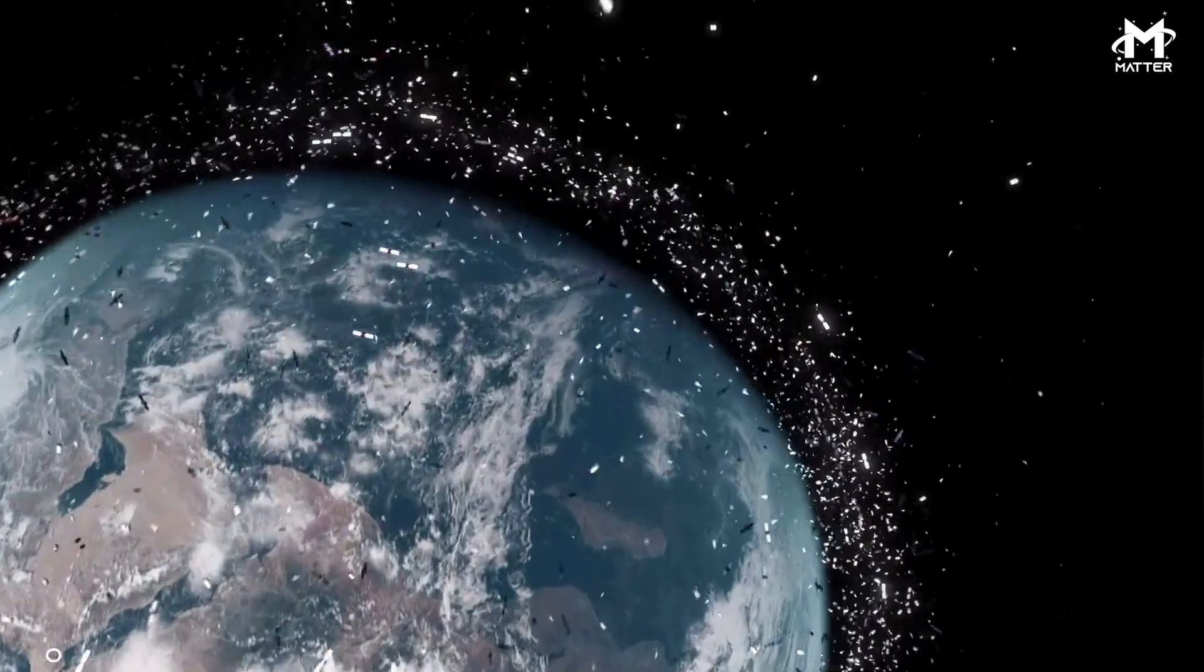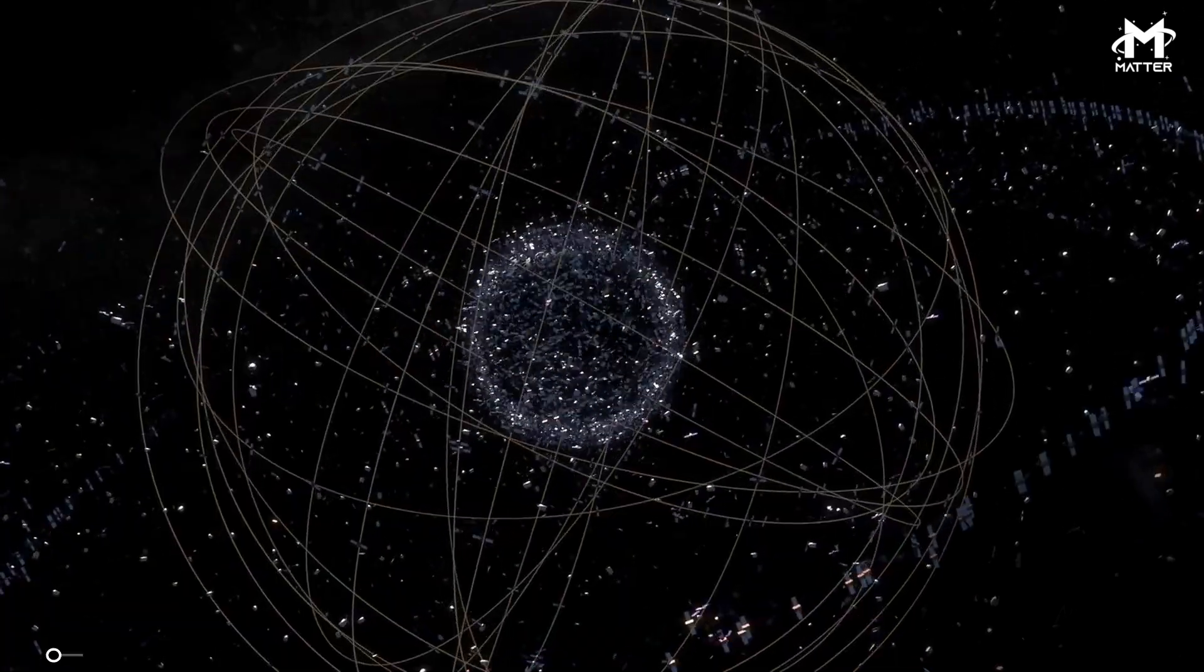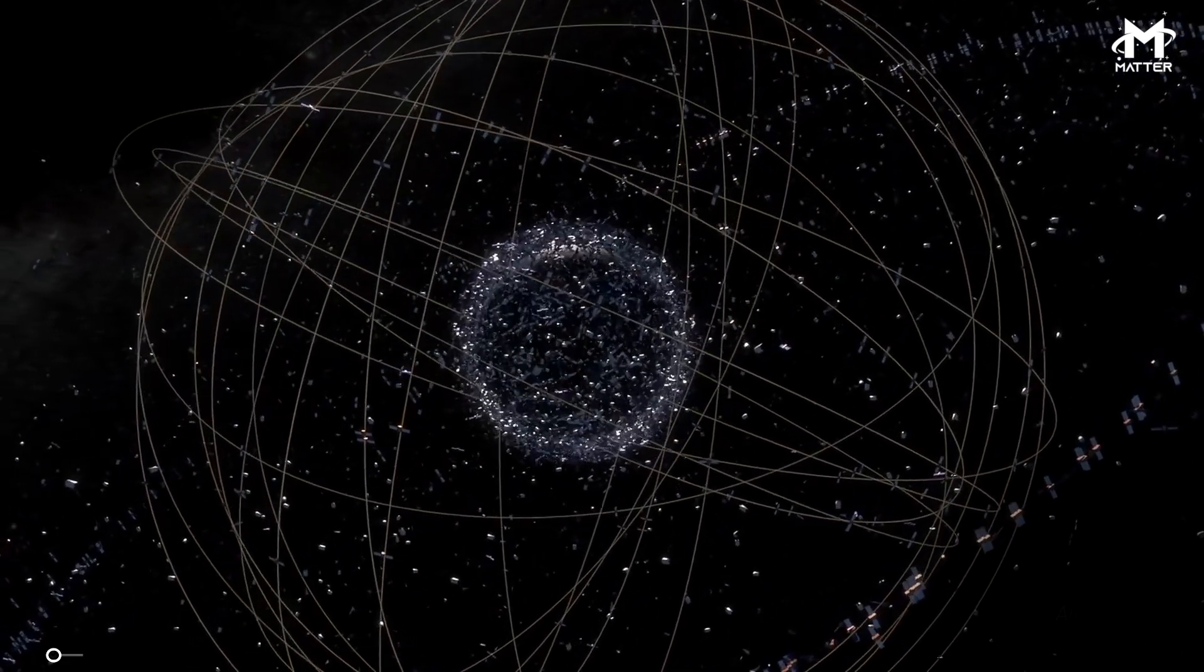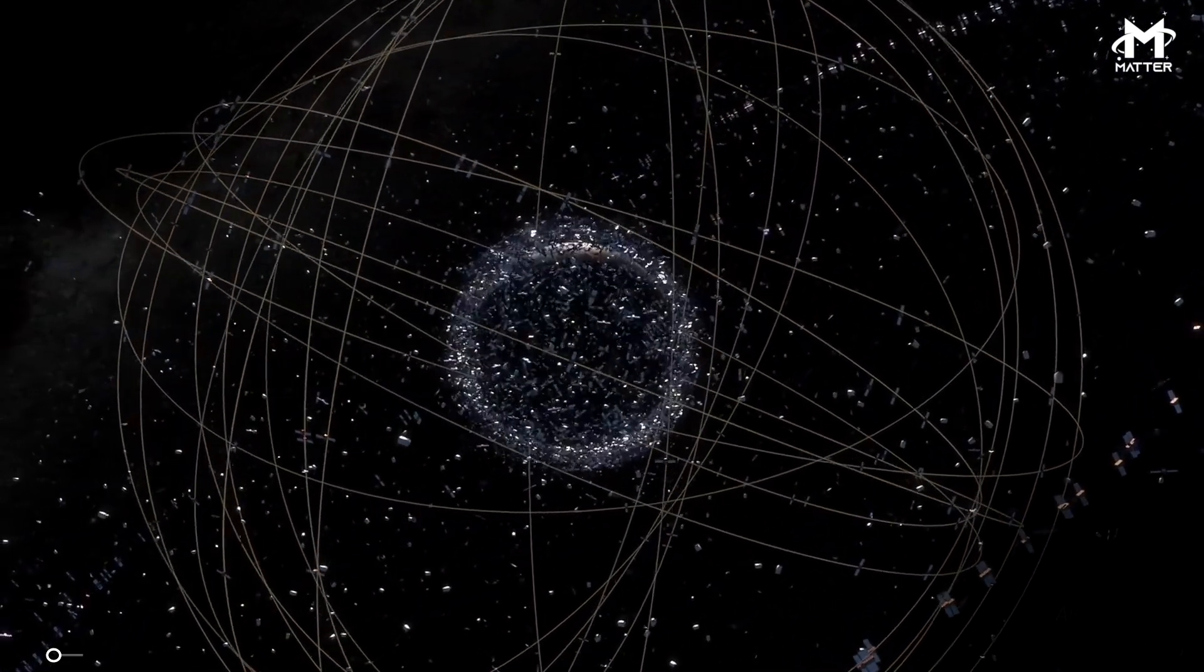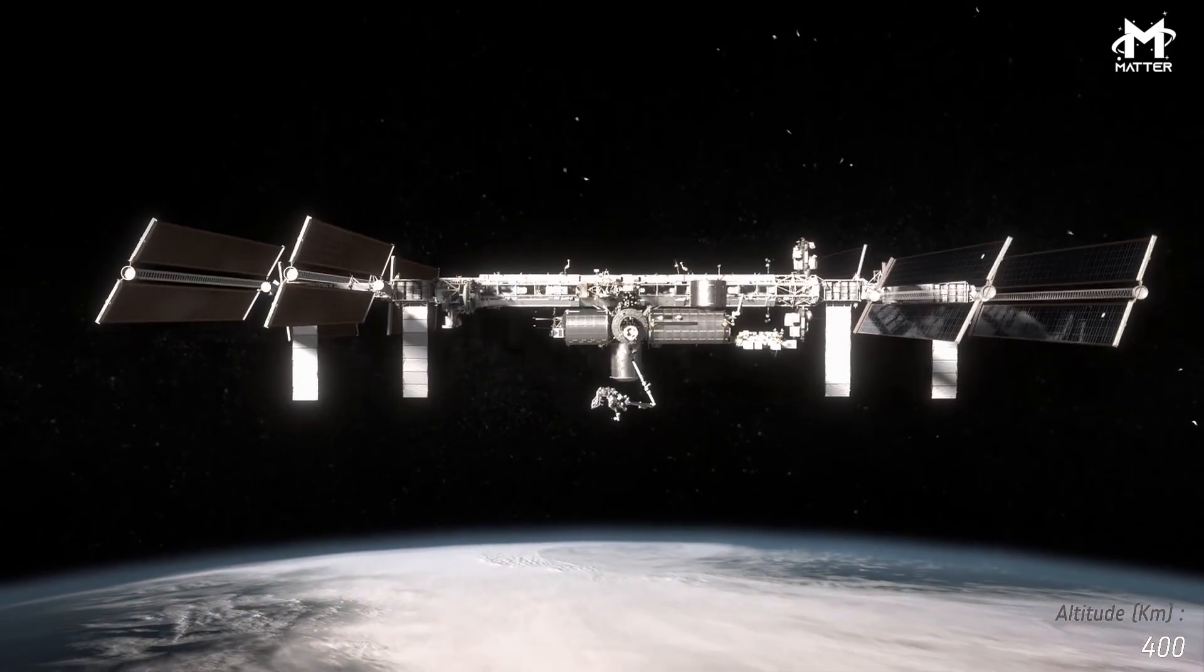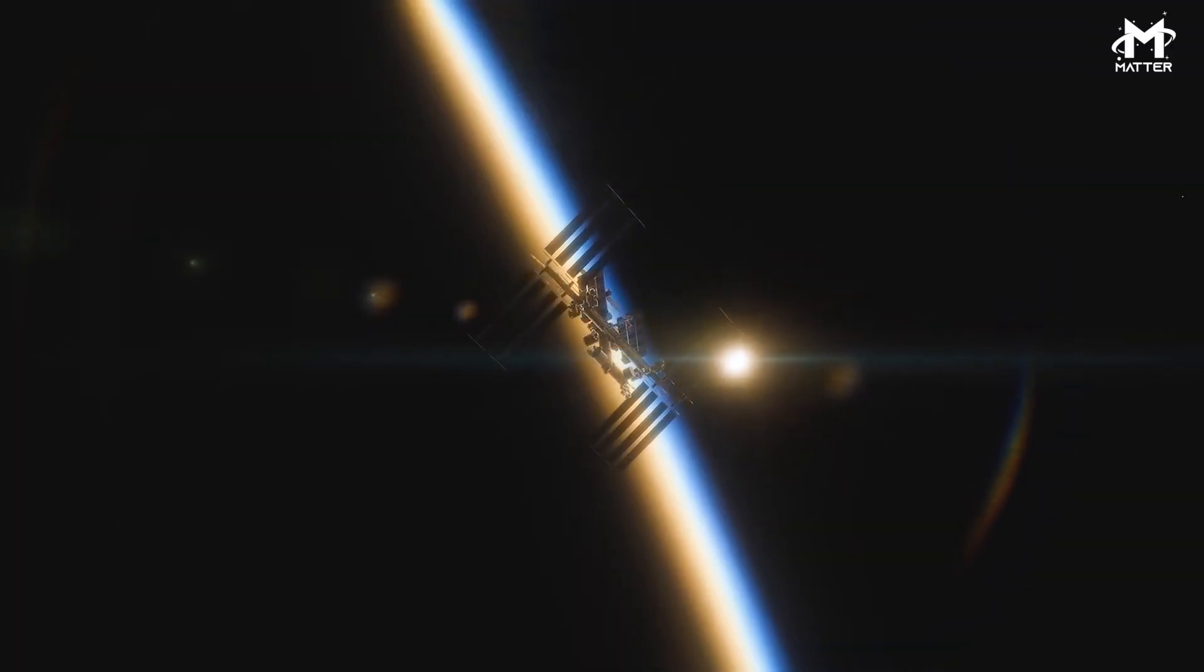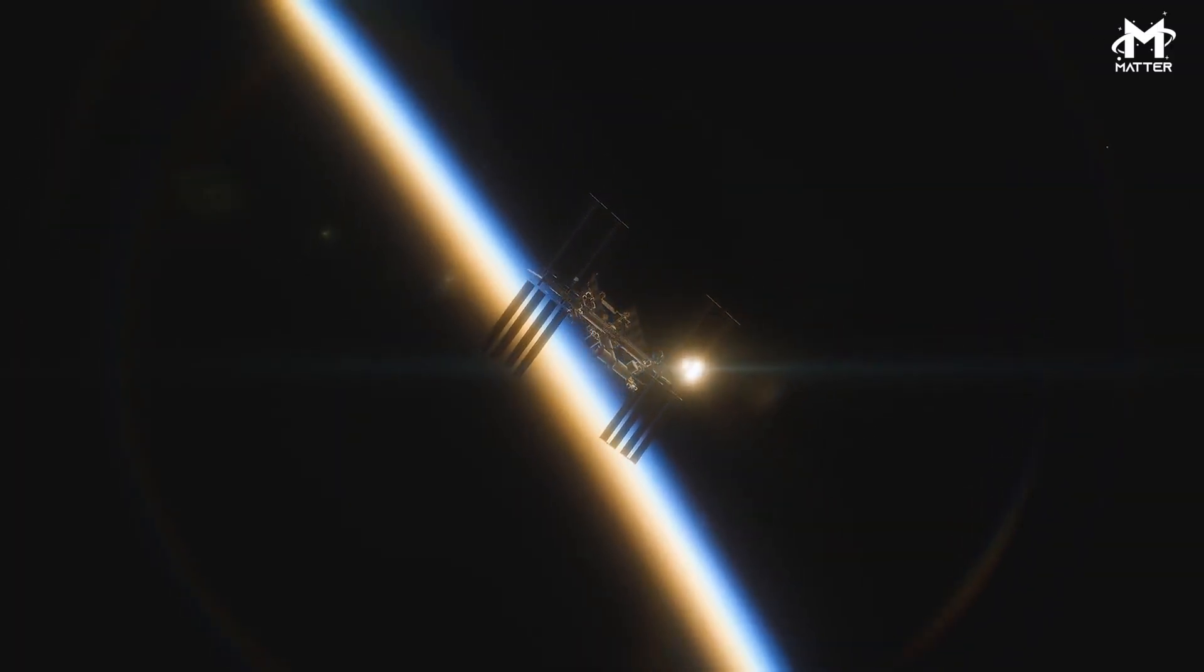There are around 23,000 pieces of debris in orbit that are larger than a softball as well as hundreds of millions of smaller pieces that threaten the current spacecraft in orbit. Even tiny flecks of paint can cause major damage to space stations when they are traveling at speeds upwards of 17,500 miles per hour.